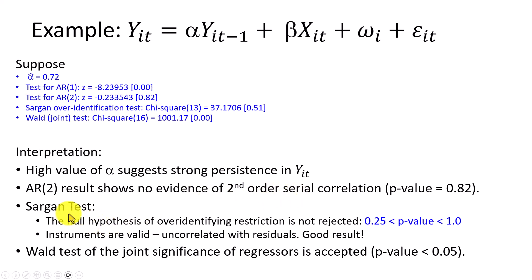The Sargan test here, with a p-value of 0.51 means that the null hypothesis of over-identifying restriction is not rejected, because it lies within the band of 0.25 and 1. So, in essence, instruments are valid in that they are uncorrelated with the residuals. So, this is a desirable result.